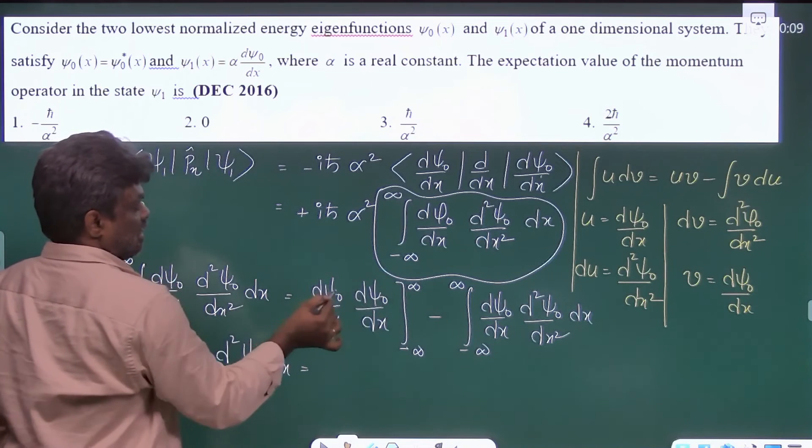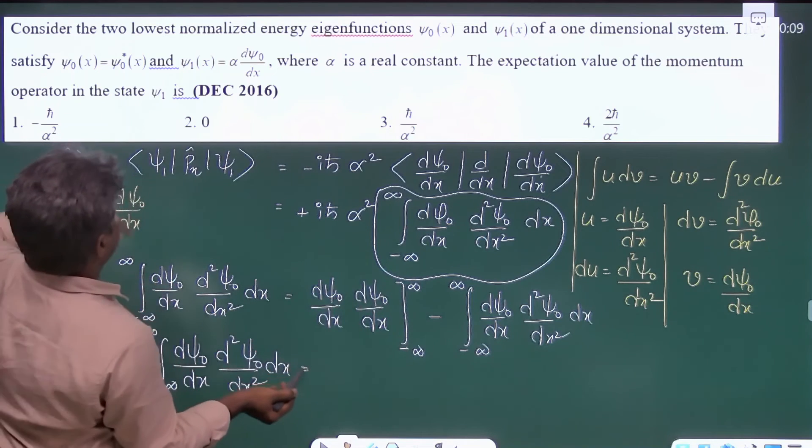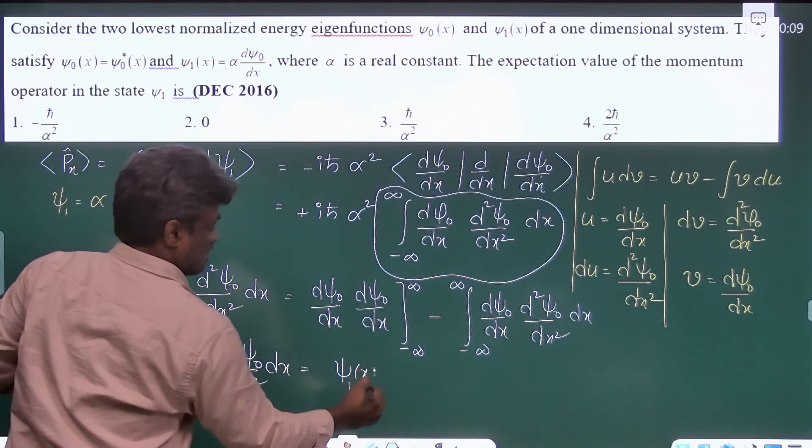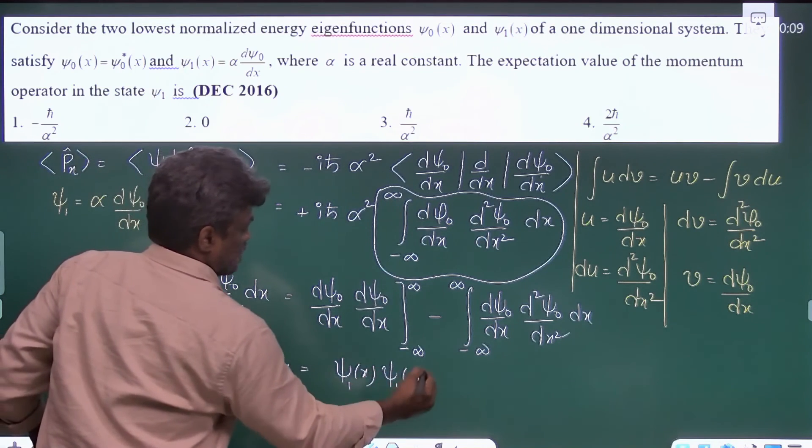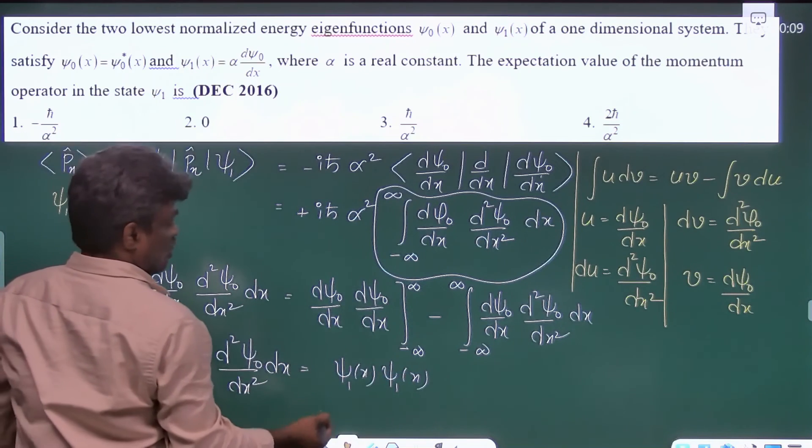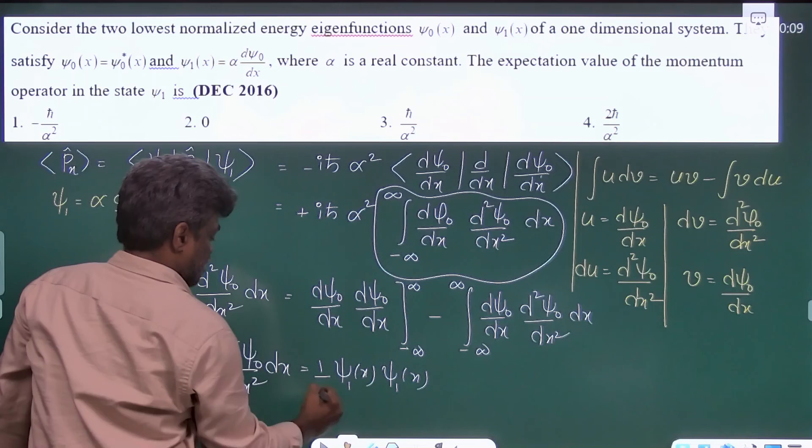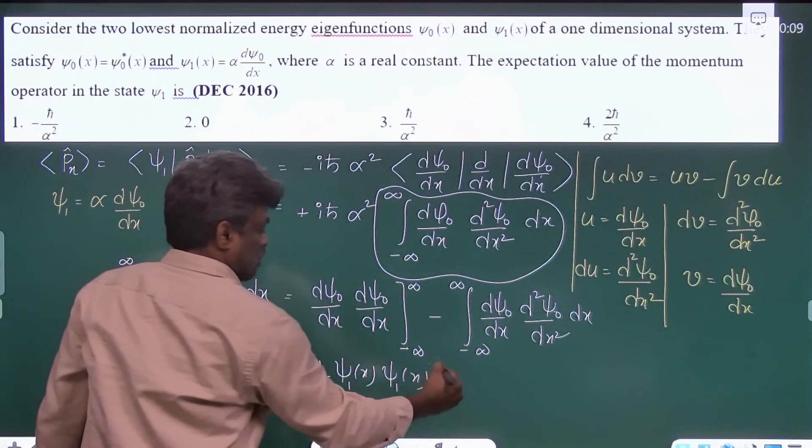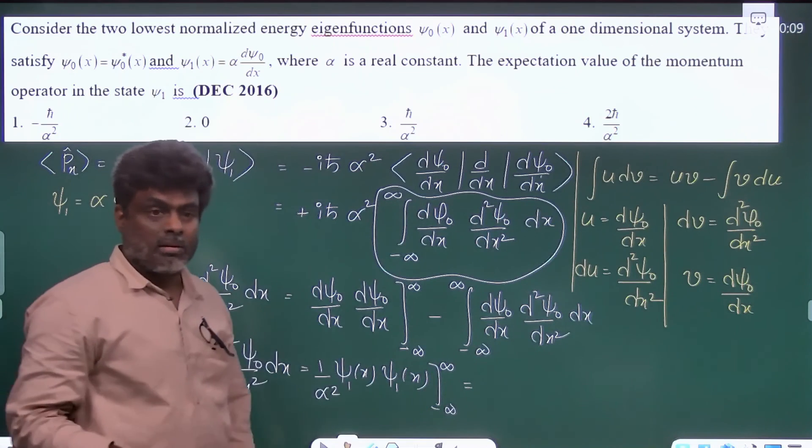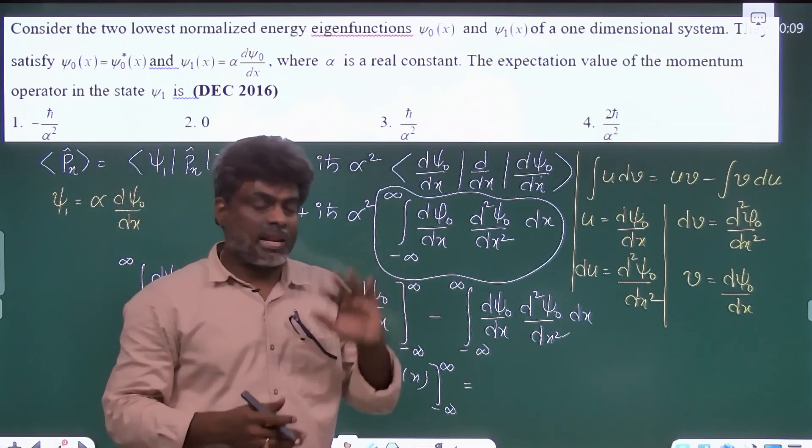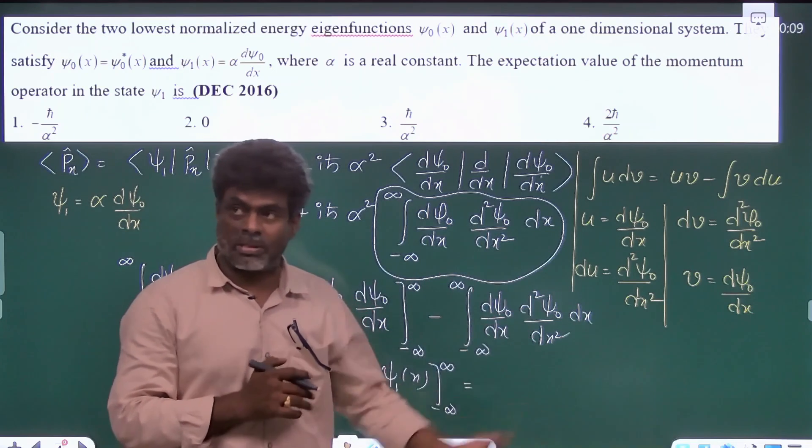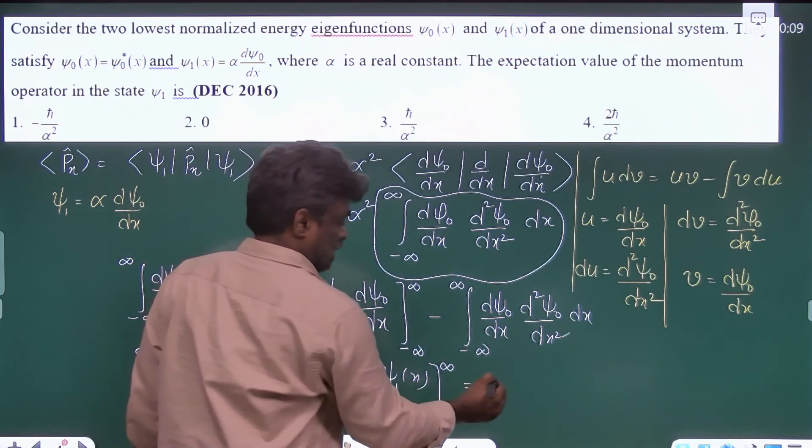Here it is d psi0 by dx, which is nothing but related to psi1, so psi1 of x—psi1 of x—and this is also related to psi1 of x. If you take it, it will be 1 by alpha square also. But limits, once you substitute minus infinity to plus infinity, psi0 and psi1 are two valid wave functions, so it should vanish as x tends to plus or minus infinity, so that's why it will be 0.